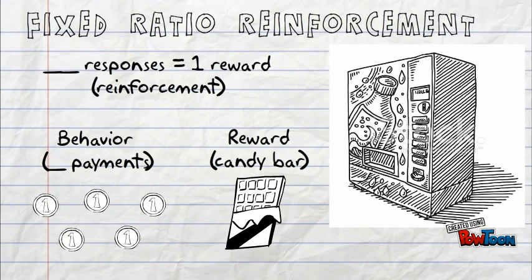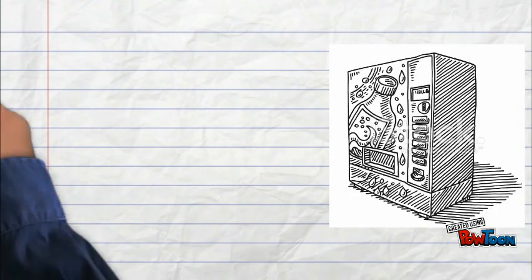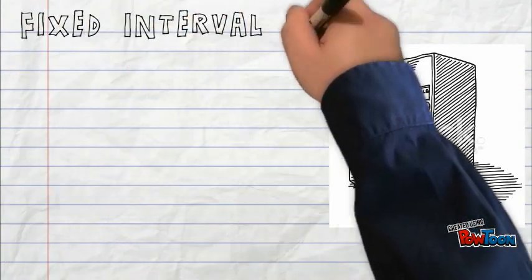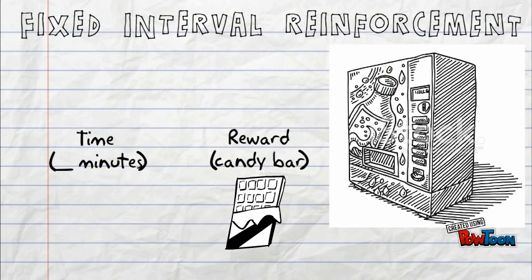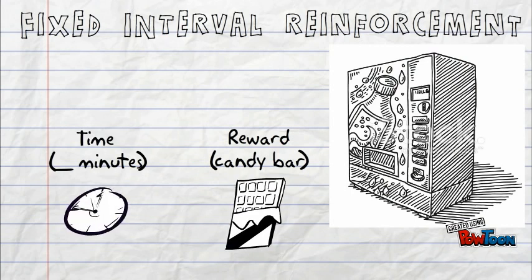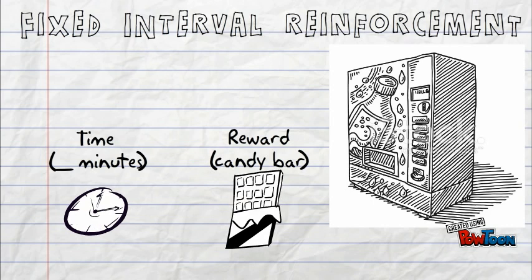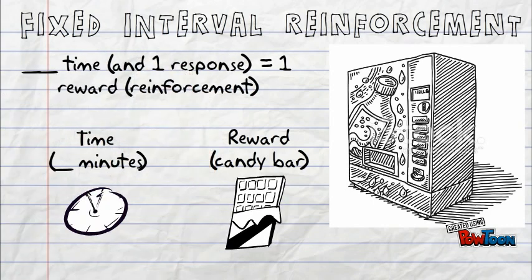The machine may also operate on a fixed interval schedule, meaning it will dispense a candy bar after a certain amount of time — let's say every minute — as long as a quarter has been put in. The customer is rewarded after one minute passes, as long as he shows the desired behavior at least once during that time.